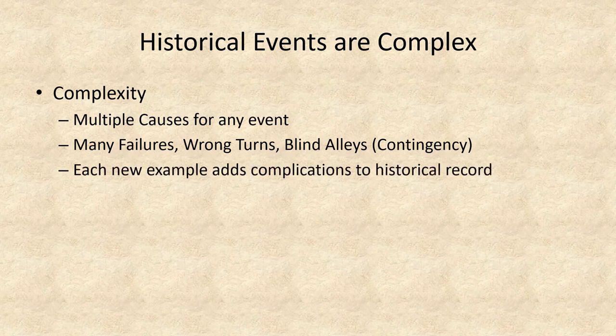We also use the word complexity to signal that every addition to our historical knowledge complicates our view of the past. Whether historians turn up evidence of events we never knew about, or whether they reinterpret events we did know about, all that knowledge adds to the universe of examples we should study to understand the past. Historians have certain goals: to find a gap in the historical literature, to find new evidence or uncover evidence of events that we didn't know about, to use a source no one else used, or no one else used as well, and to complicate the historical record.